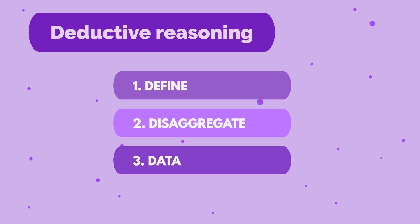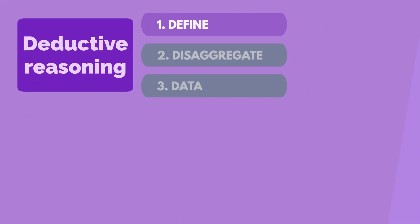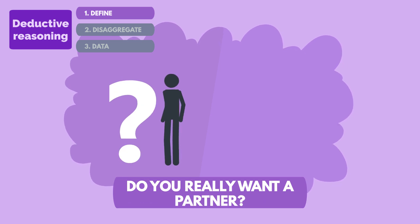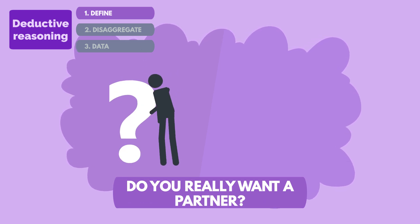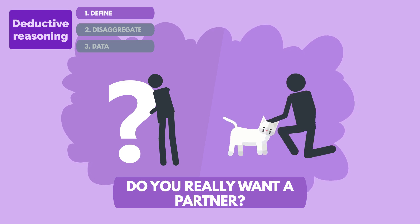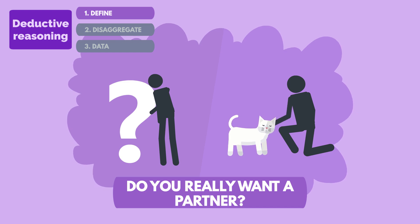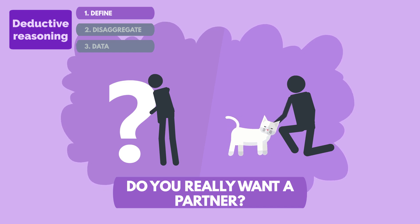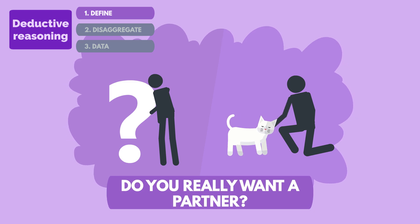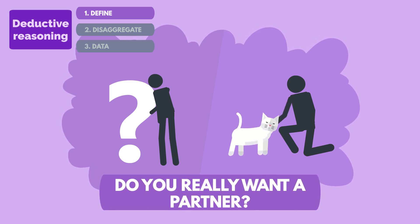Under Define, you first have to identify the problem. Do you really want a partner? Or do you just want someone to have dinner with, like a roommate, or something warm to snuggle with at night? Would a cat do? Most deductive decisions fall apart at this stage. Make sure you're asking the right questions, because without the right question, there's no way to get the right answer.